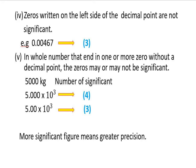For a whole number ending in one or more zeros without a decimal point, the zero may or may not be significant. In this case, the significance depends on the instrument's least count. The accuracy depends on the least count, and the least count will determine what counts as a significant figure.